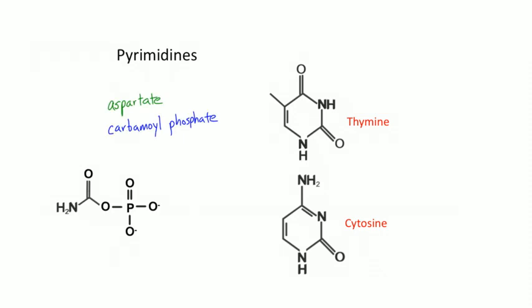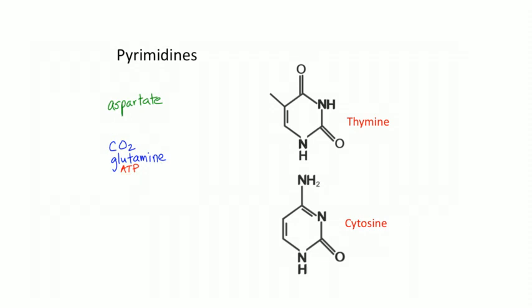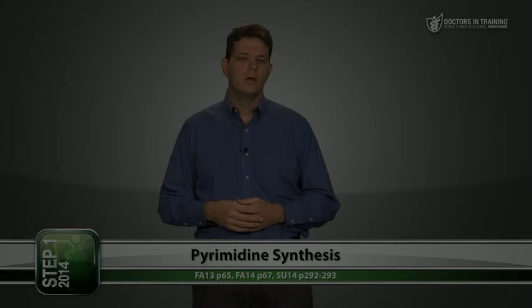For pyrimidines, you use aspartate and carbamoyl phosphate. Carbamoyl phosphate has one carbon and one nitrogen — the carbon comes from CO2/bicarb, the nitrogen from glutamine, and the phosphate from ATP. The phosphate doesn't end up in the finished pyrimidine, but pyrimidine synthesis requires ATP — it requires energy. The four things needed to make pyrimidines are aspartate, glutamine, CO2, and ATP.